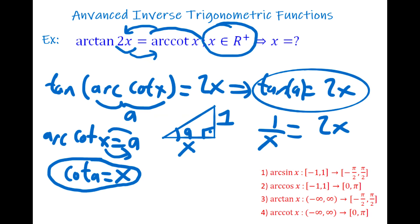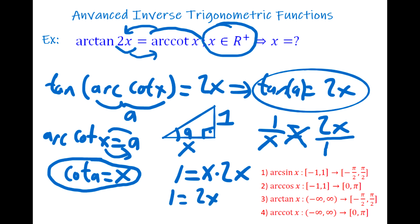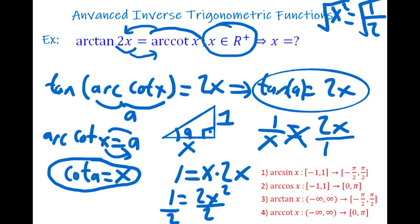Now we have 1/x = 2x. Applying cross multiplication: 1 = 2x². Dividing both sides by 2: x² = 1/2. Taking the square root of both sides gives x = ±√(1/2), but since x must be positive, we take only the positive value.